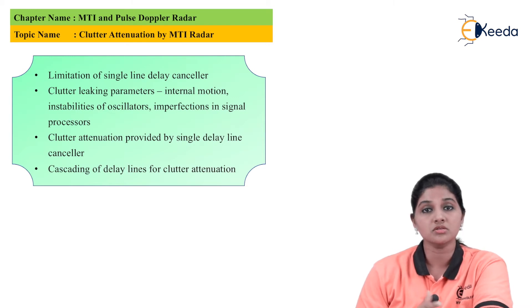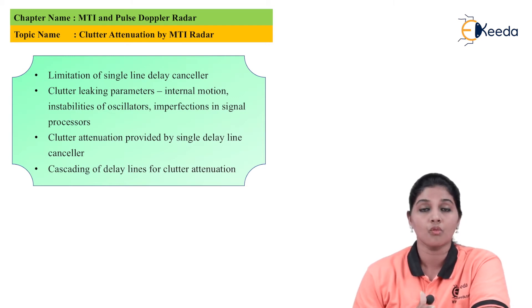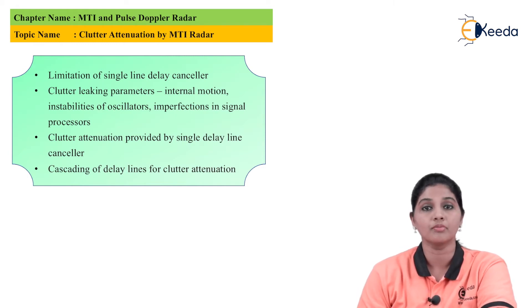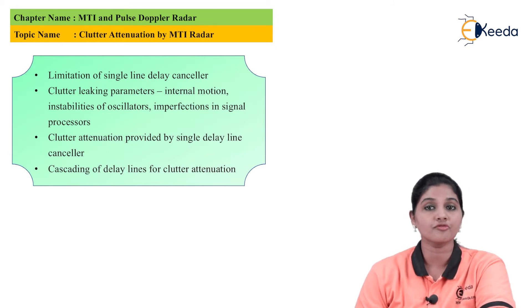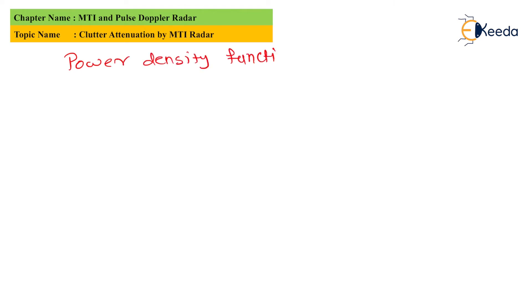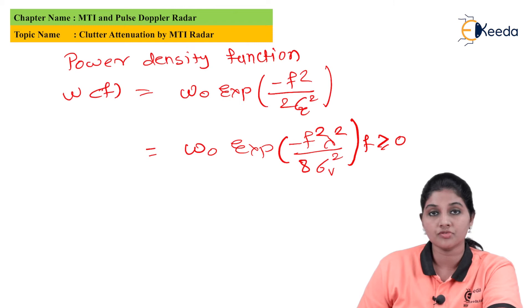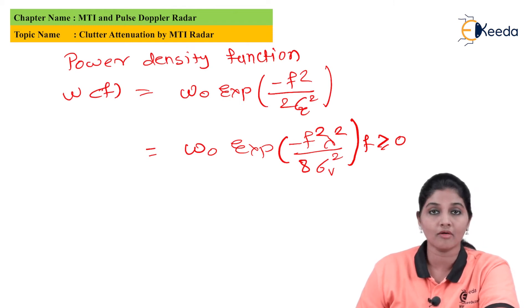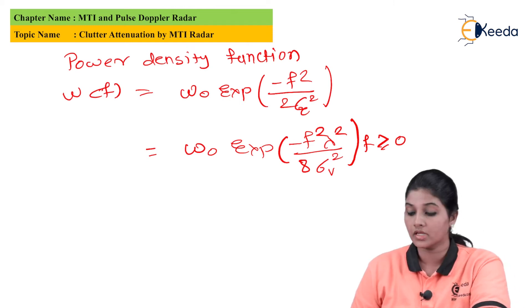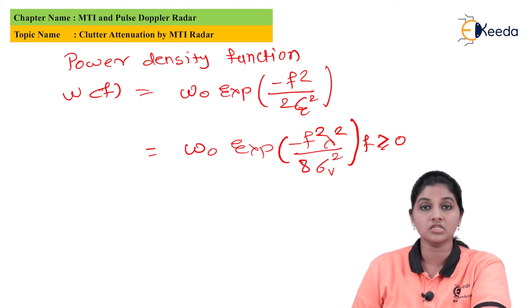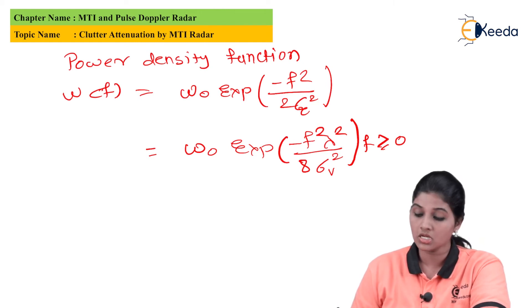The frequency response of a delay liner is considered as a constant cosine amplitude variation with respect to multiples of pulse repetition frequency. The power density function can be given for the clutter attenuation value, where w0 is the peak value of the power density function of clutter, sigma_c is the standard deviation of clutter, and sigma_v is the standard deviation of the clutter signal at frequency f.